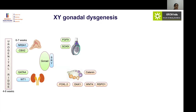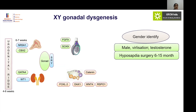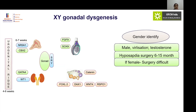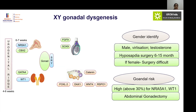In XY gonadal dysgenesis, gender identity depends on the degree of virilization and androgen exposure. Most patients identify as male and can be treated with testosterone; hypospadias can be repaired around 6 to 15 months. If the patient identifies as female, surgical creation of a vaginal opening is difficult. The risk of gonadal malignancy is very high — above 30 percent. For defects in NR5A1 and WT1 with abdominal gonads, gonadectomy is indicated at the earliest.